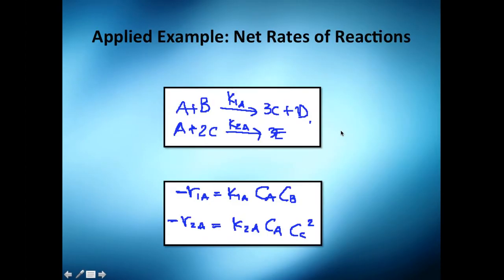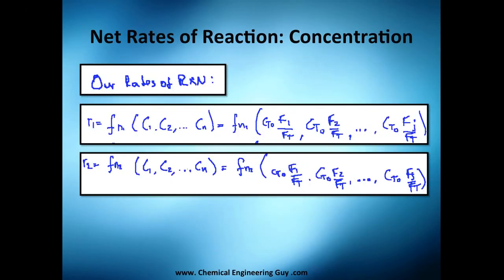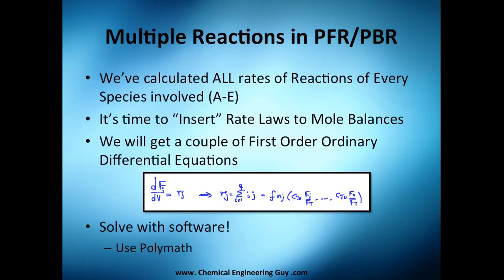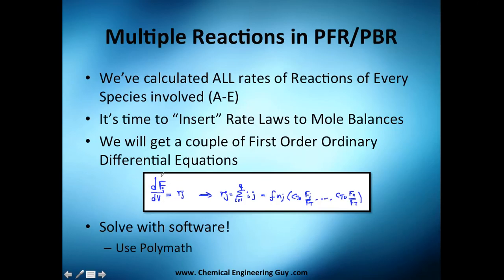What we're going to do is substitute into every single reaction our rate expressions. We'll insert the rate laws we derived. For a PFR, you have the differential of flow rate divided by the differential of volume equals the rate of reaction of that species. This gives us a set of first-order ordinary differential equations.